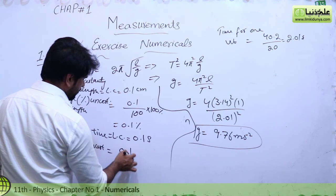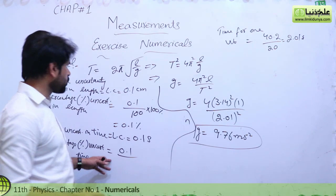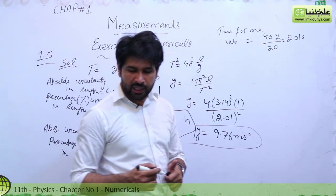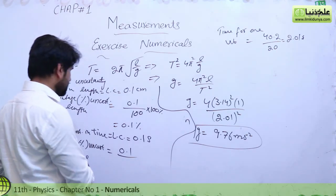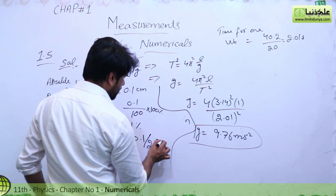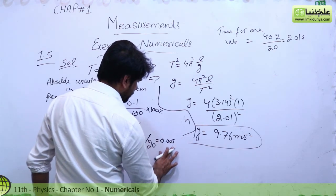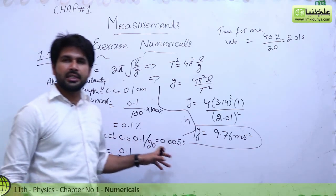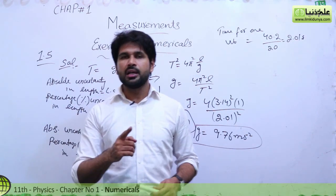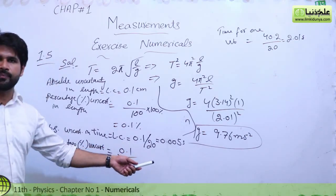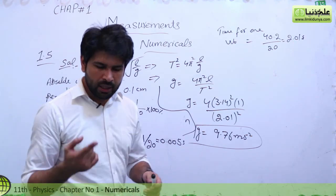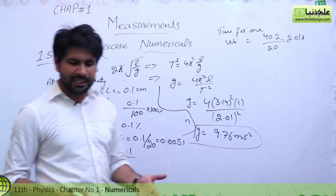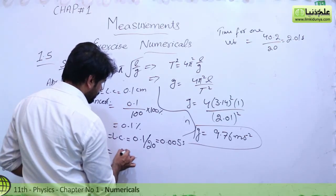The total time was given for 20 vibrations. First we find the least count for 20 vibrations: uncertainty in measuring time = 0.1 divided by 20 = 0.005. This 0.005 seconds is the absolute uncertainty in time. The 0.1 seconds was for 1 vibration, but here we had 20 vibrations, so least count = 0.1/20 = 0.005 seconds.